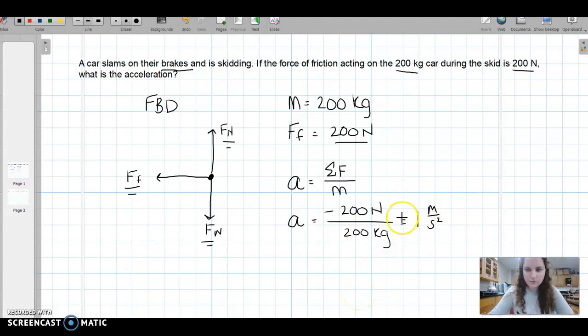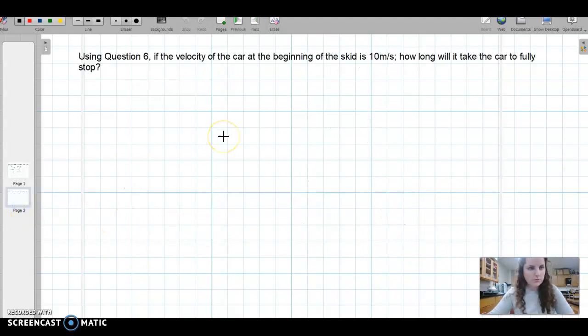That was number six, we solved for the acceleration. Now let's jump to number seven. Using problem six, so the problem that we previously just did, if the velocity of the car at the beginning of the skid is 10 meters per second, how long will it take the car to fully stop?